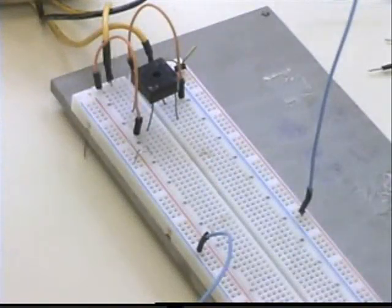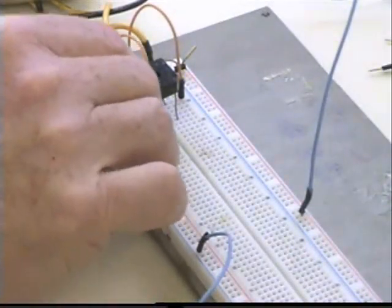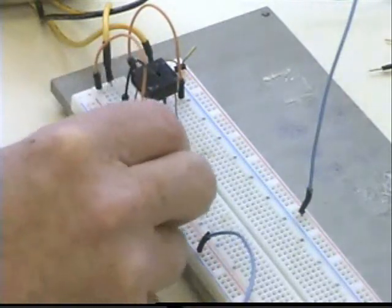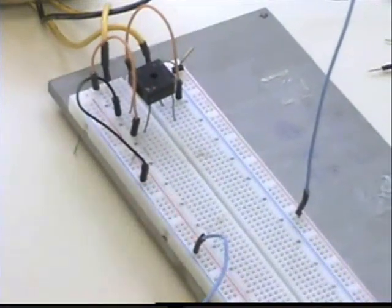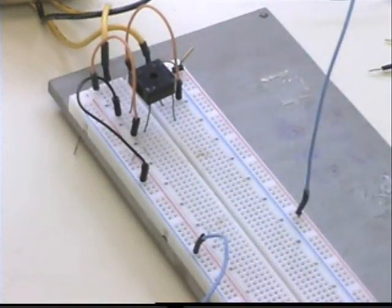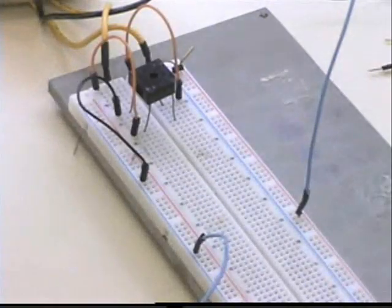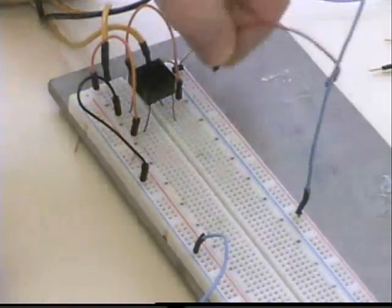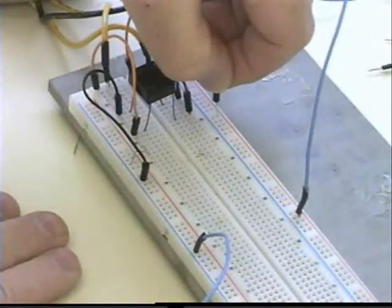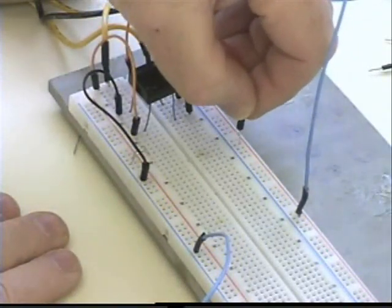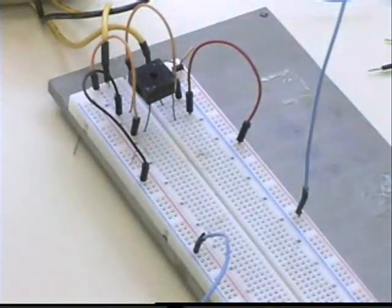Next I'm going to take the negative side of the diode bridge and use a black color jumper and jump it over here to the blue strip. I'm going to use blue as my negative common. I'm going to go ahead and jumper the positive of the diode bridge up here along the top with the red strip. That's going to be my unfiltered DC.